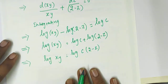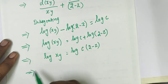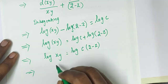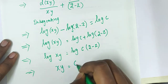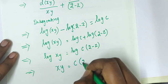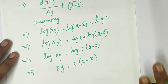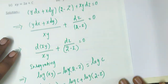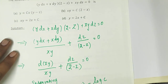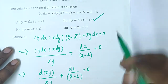Since log a equals log b implies a equals b, we remove the logs. Therefore xy equals c into (2 minus z). This matches option B, which is the correct answer.